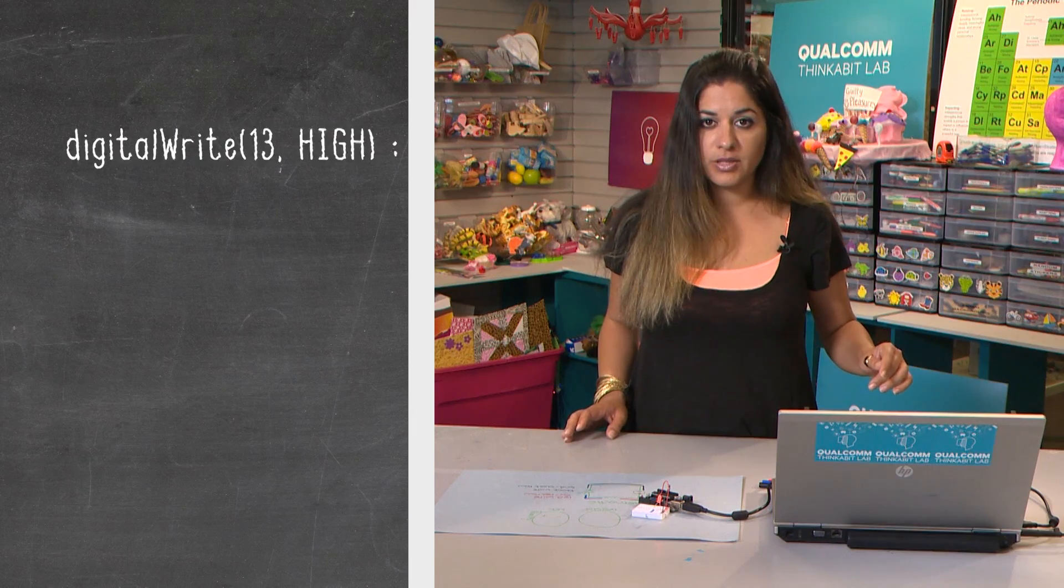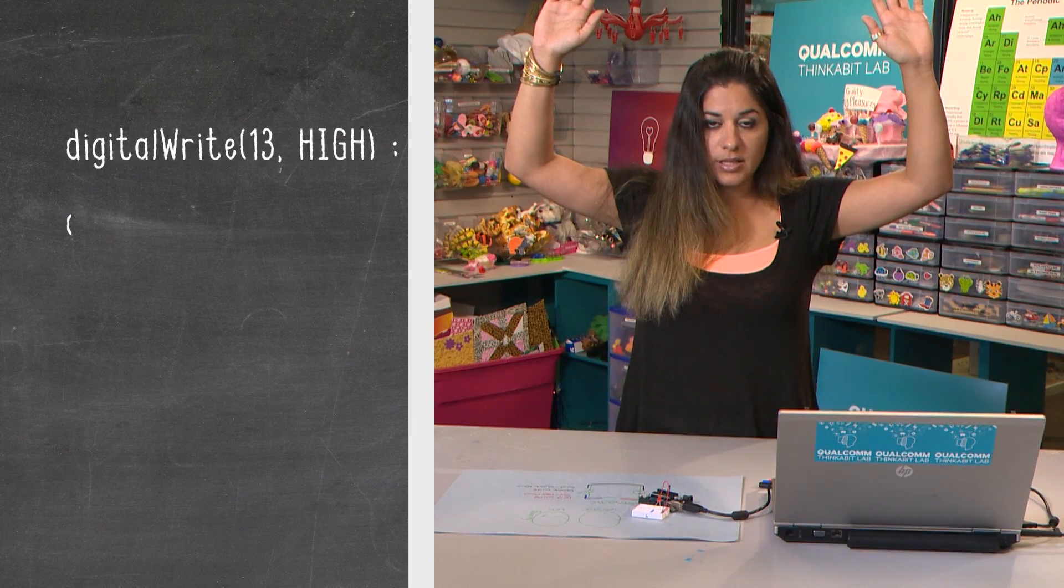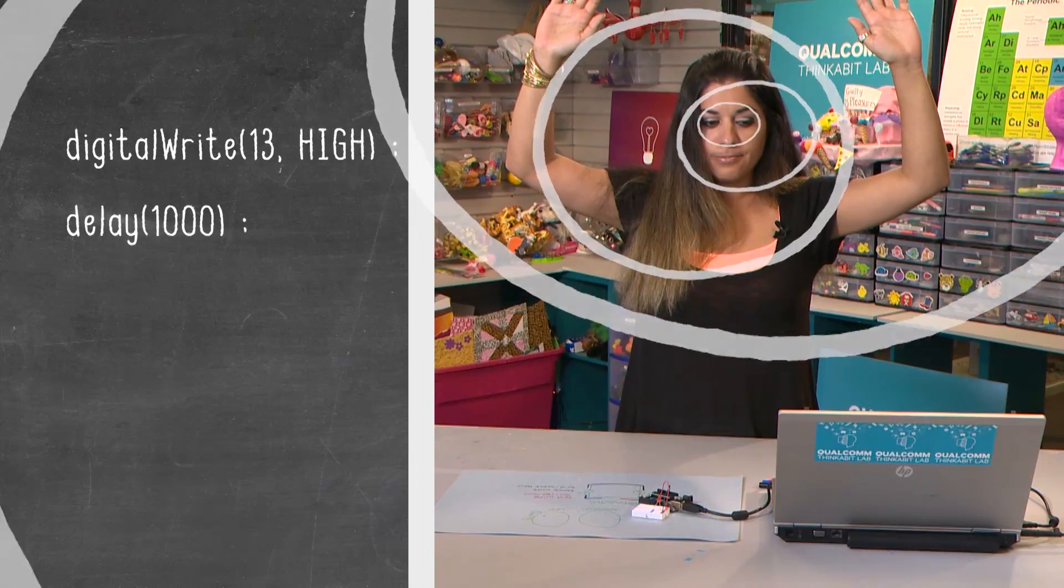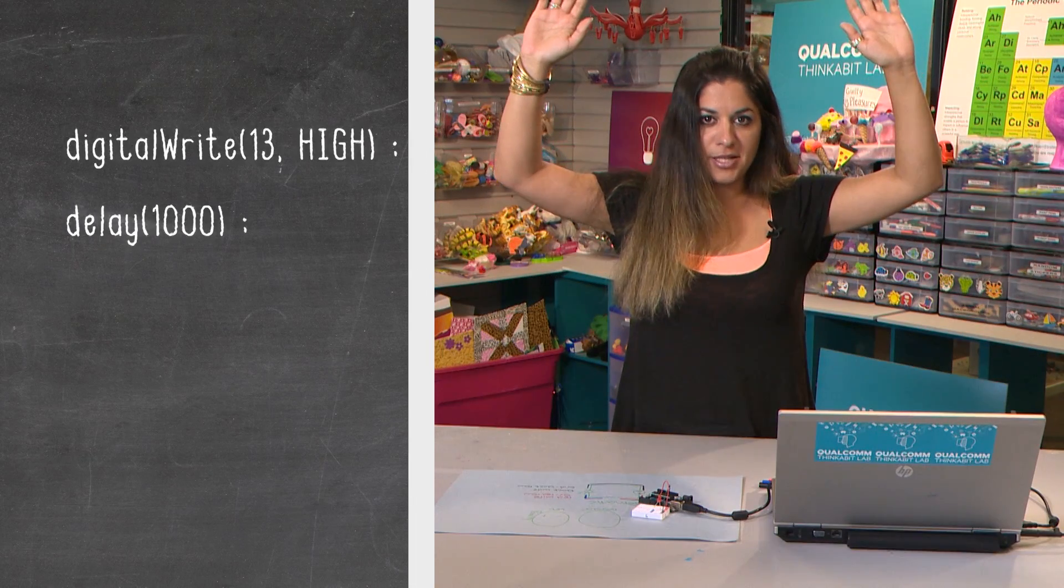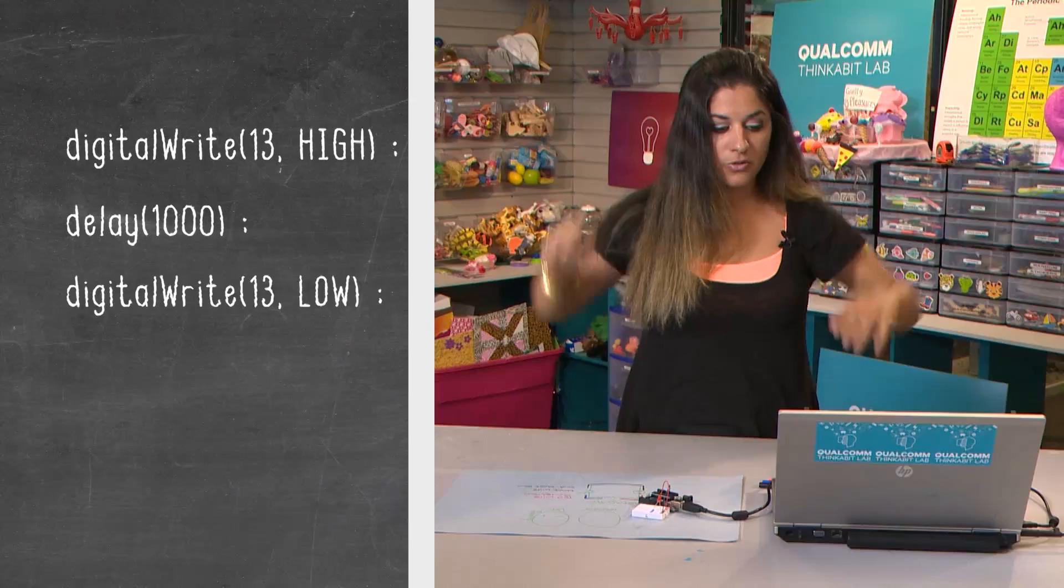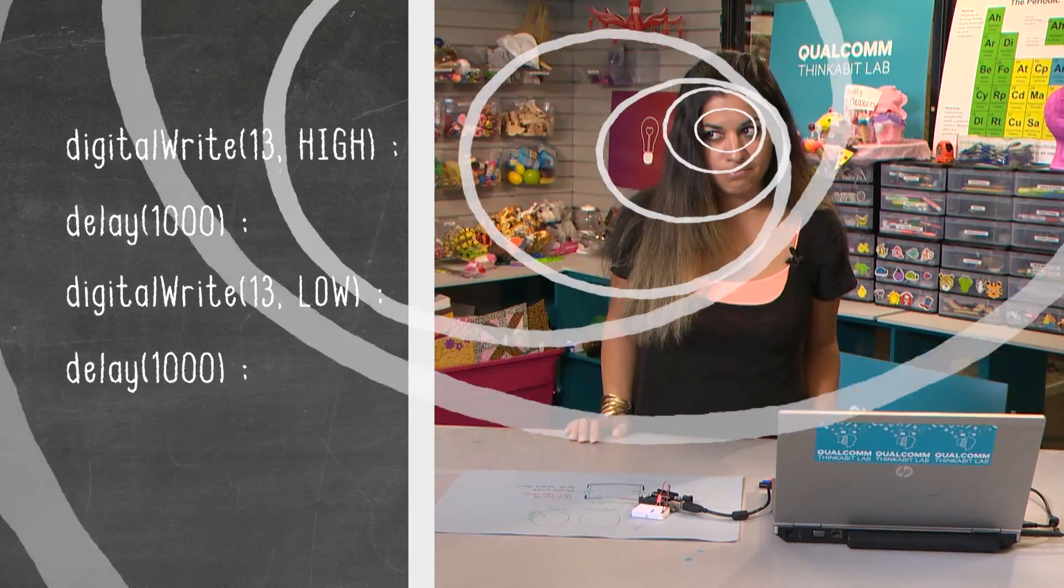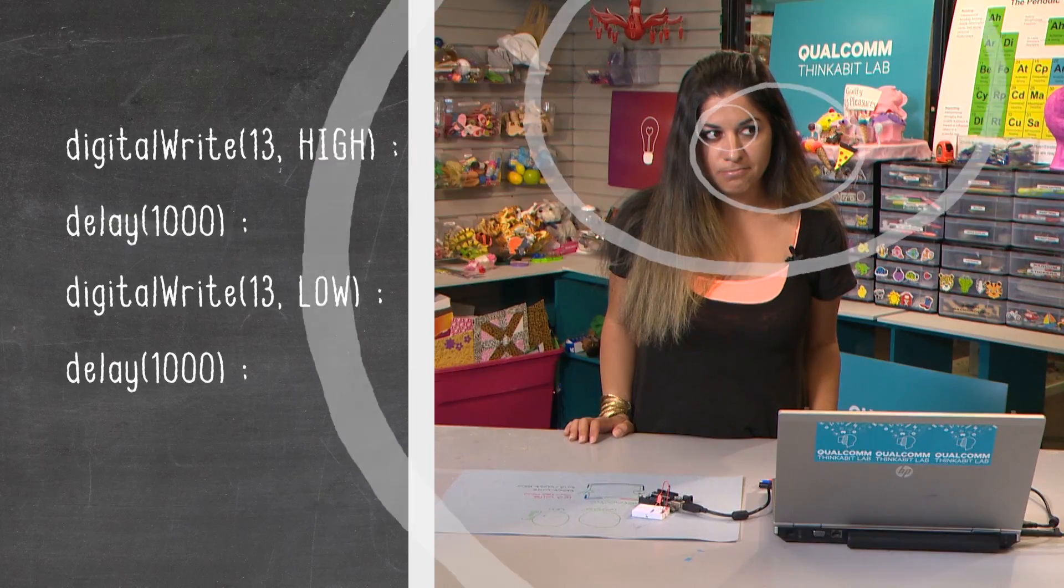All right. So digital write 13 high. Again, high voltage, LED turned on, delay 1,000. All right. Next line of code, digital write 13 low. Low voltage, LED off, delay 1,000. Okay.